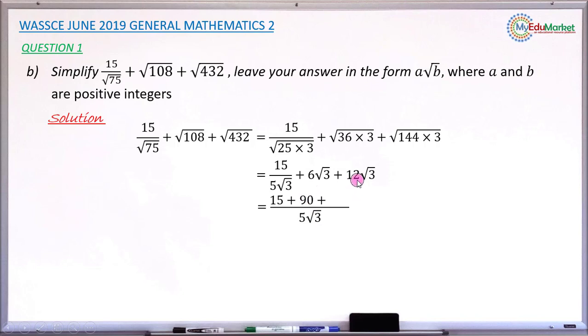So 12 root 3 over 1. That 1 into the LCM 5 root 3 will give 5 root 3. 5 root 3 times 12 root 3 that will give answer 180. So adding the three numbers there at the numerator level will give answer 285, then copy your denominator which is 5 root 3.